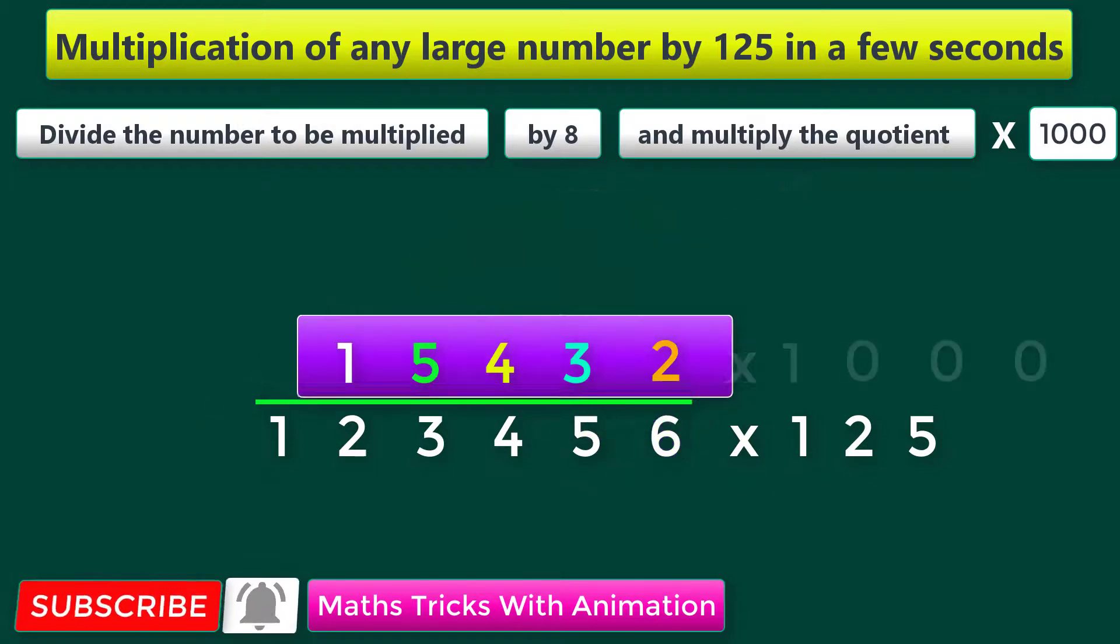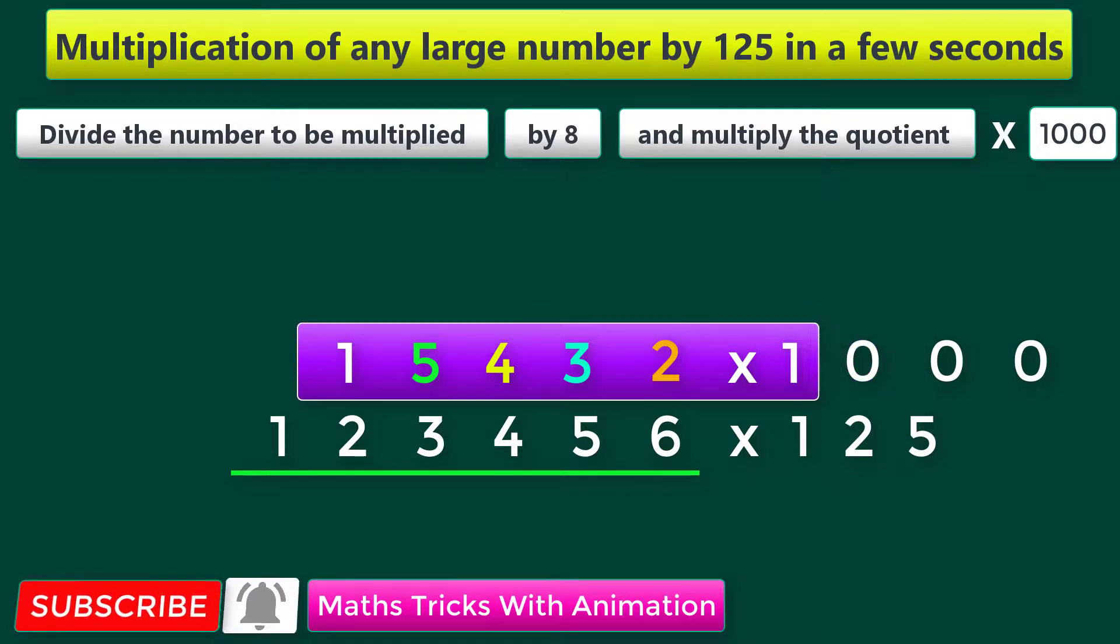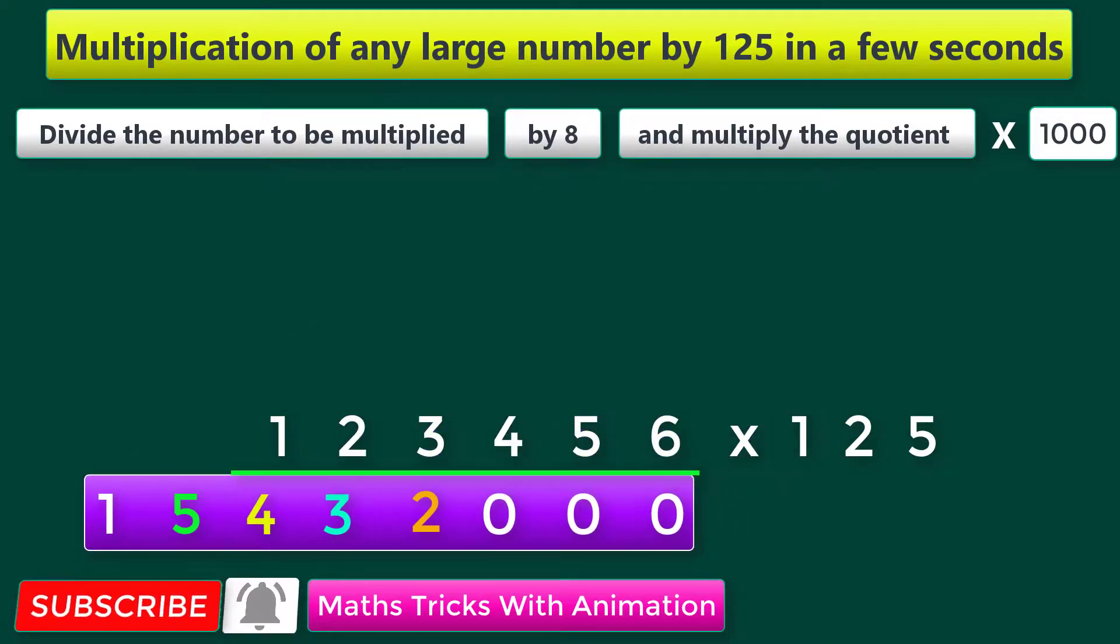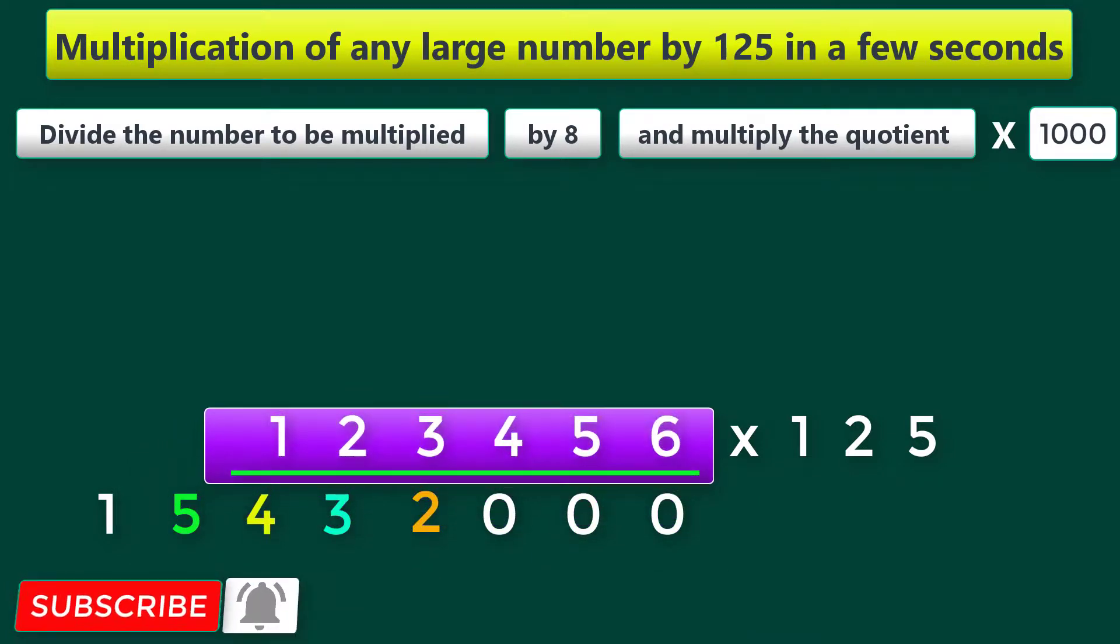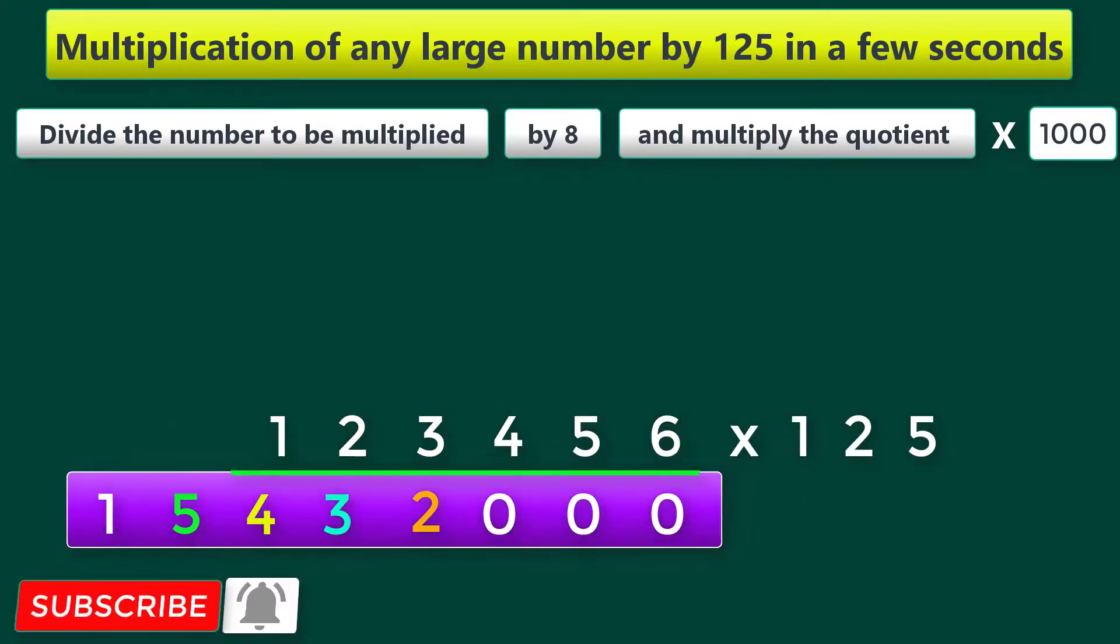Now this quotient has to be multiplied by 1000. So instead of multiplying the number 15,432 by 1000, just put these three zeros beside this number. That's all. Even if the number 1 lakh 23,456 is multiplied by 125, you will get the same answer.